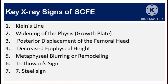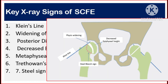Key X-ray signs of SCFE include: number one, Klein's line; number two, widening of the physis growth plate; number three, posterior displacement of the femoral head; number four, decreased epiphyseal height; number five, metaphyseal blurring or remodeling; number six, Trethowan's sign; number seven, Steel sign.